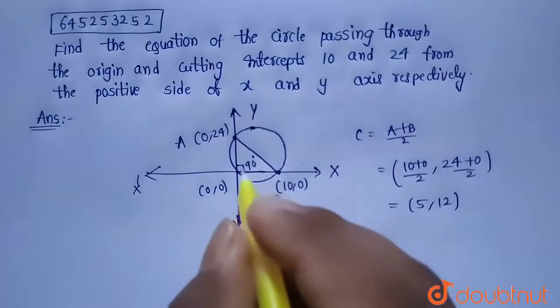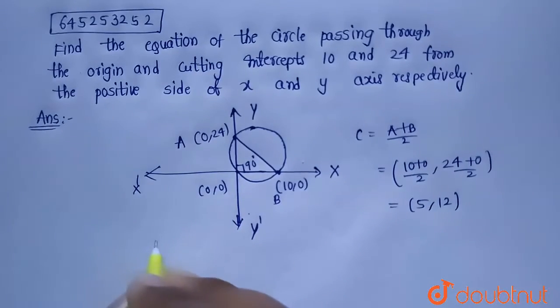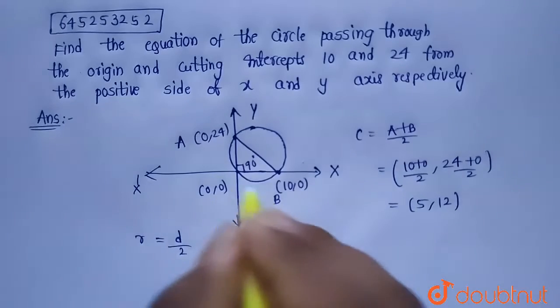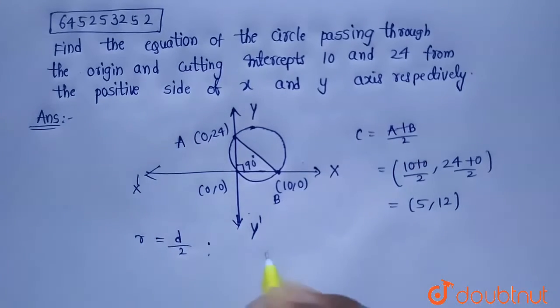So center is 5 comma 12. Now let's find out the radius. Radius is nothing but diameter by 2, and diameter is nothing but AB because A and B are endpoints of the diameter.